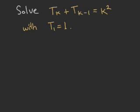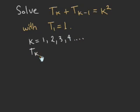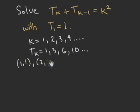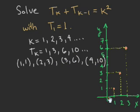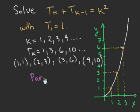Furthermore, if we use k equal 1, 2, 3, 4, etc., and we find the values of T sub k: 1, 3, 6, 10, etc., plotting the points (1,1), (2,3), (3,6), (4,10), the curve we draw looks like a parabola. Since parabolas are expressed by polynomials of second degree, let us make the assumption that T sub k is a polynomial of degree 2.